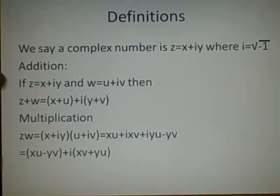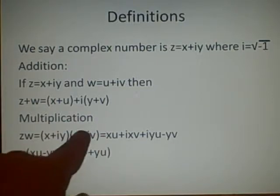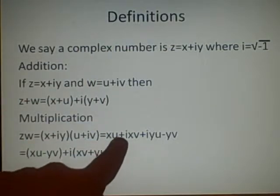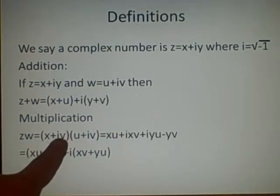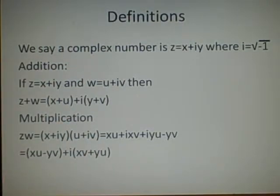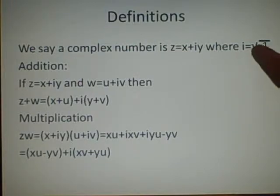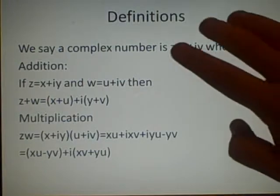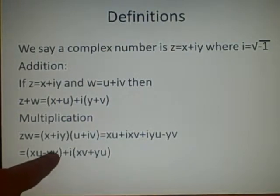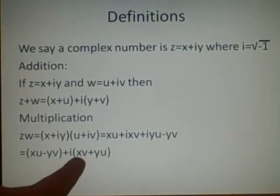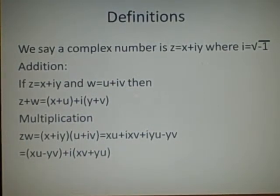Multiplication is just the same. We have zw, so we have our z and our w, and we're just multiplying them together as normal brackets. So we get xu plus ixv plus iyu plus i-squared yv. Now i-squared is just negative 1, because if we square the square root of minus 1 the square root cancels out and we get minus 1. So the real part is xu minus yv and the imaginary part is xv plus yu.